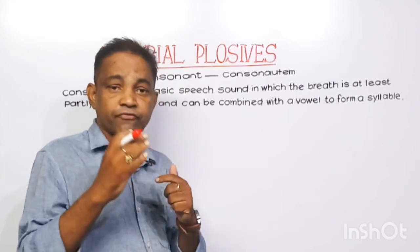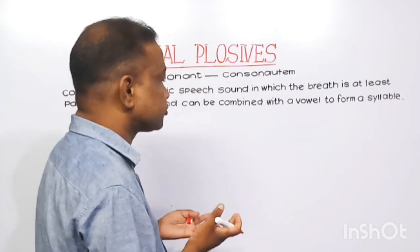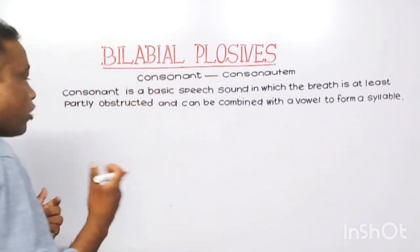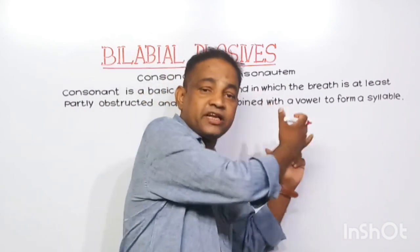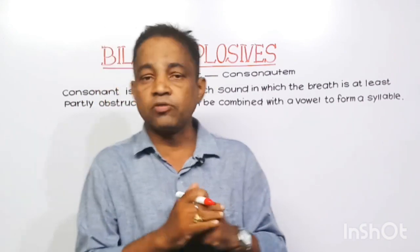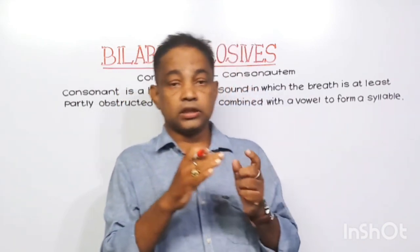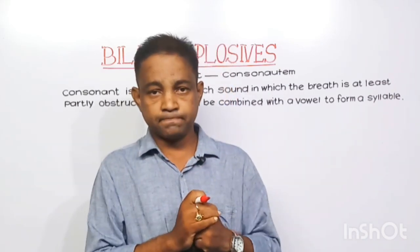Consonant is a basic speech sound in which the breath is at least partly obstructed and can be combined with a vowel to form a syllable. This definition says without a vowel it is not possible for us to produce a consonant sound. In my last video, I told about IPA symbols. They are divided into vowels and consonants. Vowels are 20 in number and consonants are 24 in number.